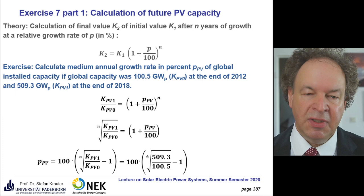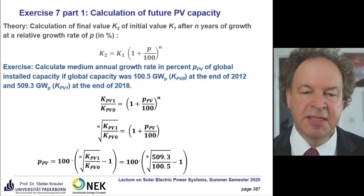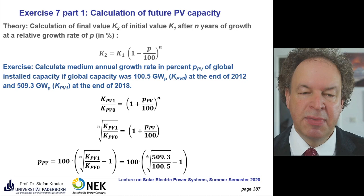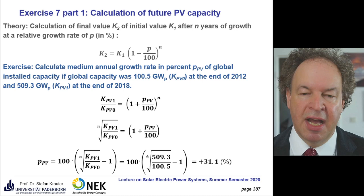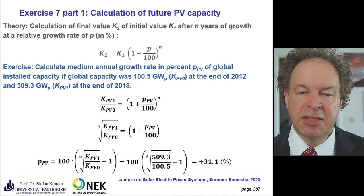We put numbers in. Between 2012 and 2018 is six years, so we take the sixth root because n is 6. K_PV1 was 509.3 gigawatts and K_PV0 was 105 gigawatts. We can eliminate the gigawatt units and calculate with numbers only. The result is 31.1 percent, or in decimal 0.311.